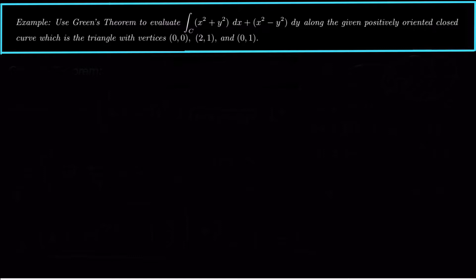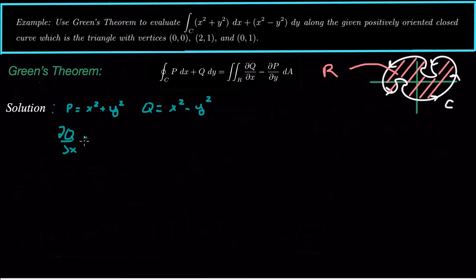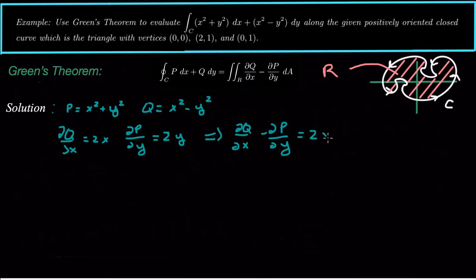Now for the next example: use Green's theorem to evaluate the line integral over curve C, where C is the positively oriented closed curve — the triangle with vertices (0,0), (2,1), and (0,1). Same approach: Green's theorem says we evaluate the line integral using a double integral. Here P equals x squared plus y squared, and Q equals x squared minus y squared. So partial Q partial x is 2x, and partial P partial y is 2y. Therefore partial Q partial x minus partial P partial y equals 2x minus 2y.